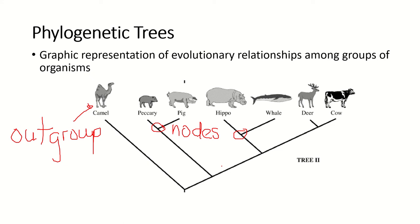The way you can tell which organisms are more closely related is you can just count the nodes between them. To go from a peccary to the pig, you only need one node. So those are very closely related, and we call those sister species. Sister species are the most closely related pair of species.